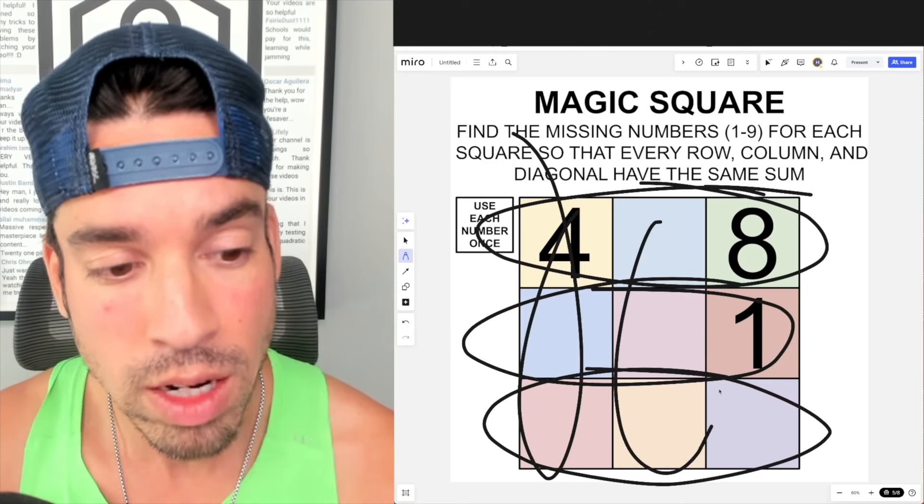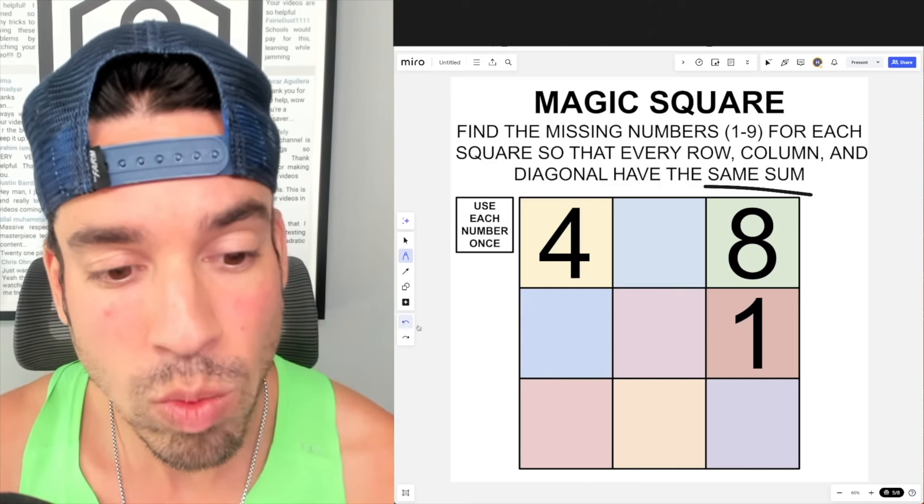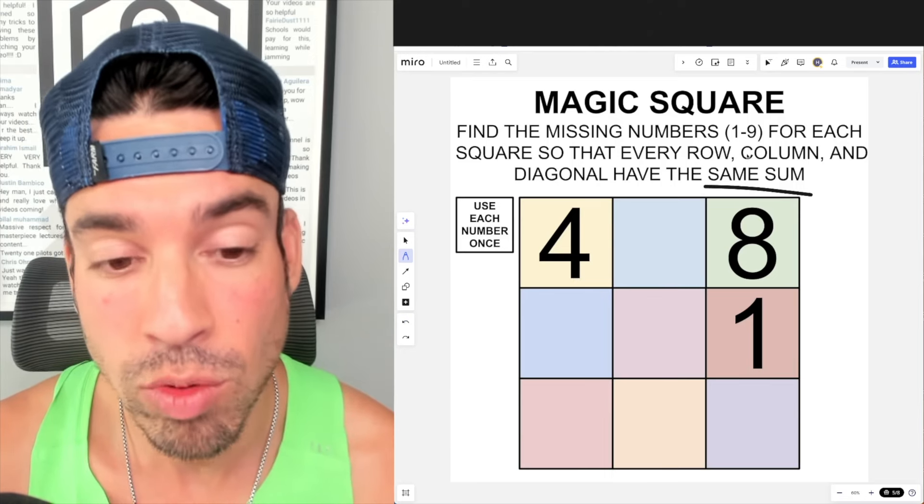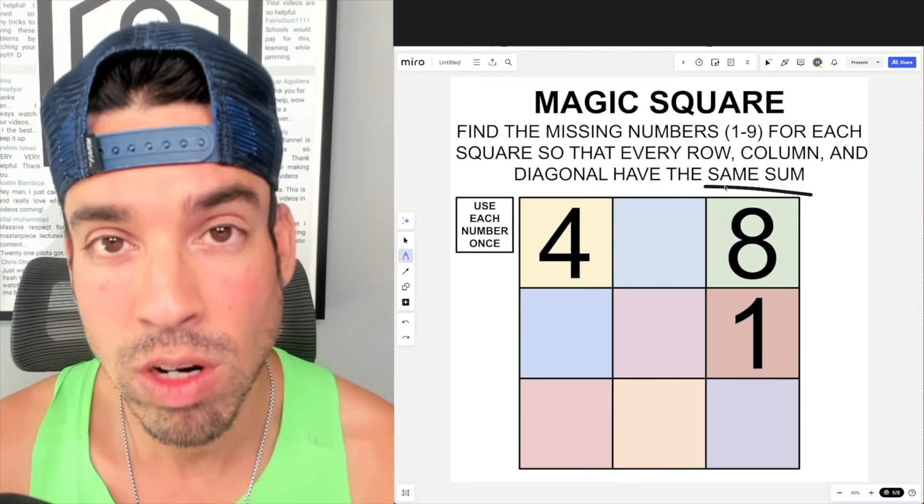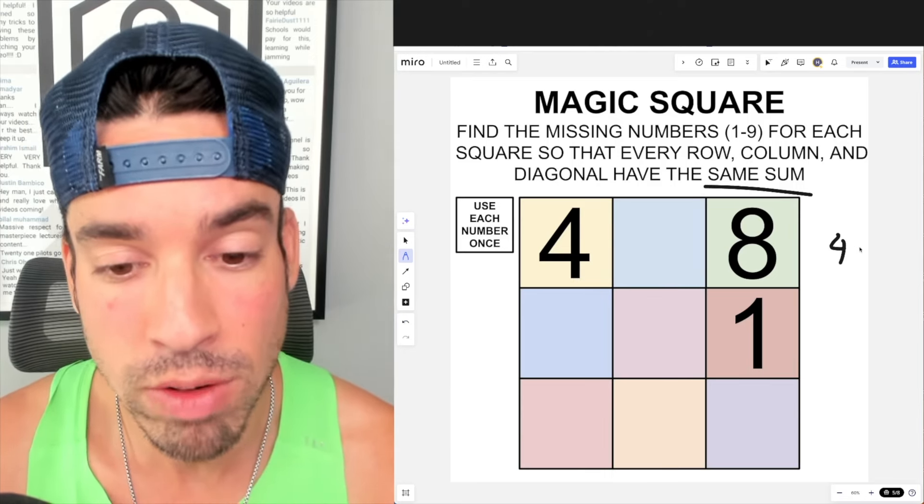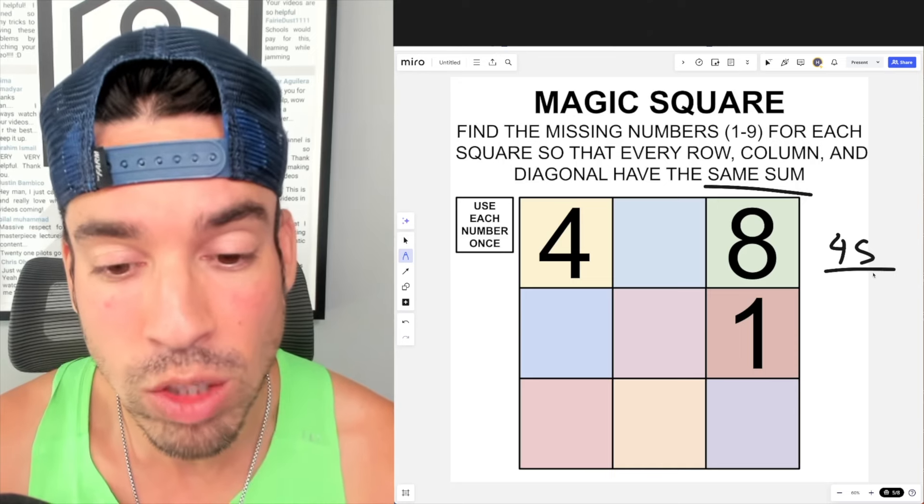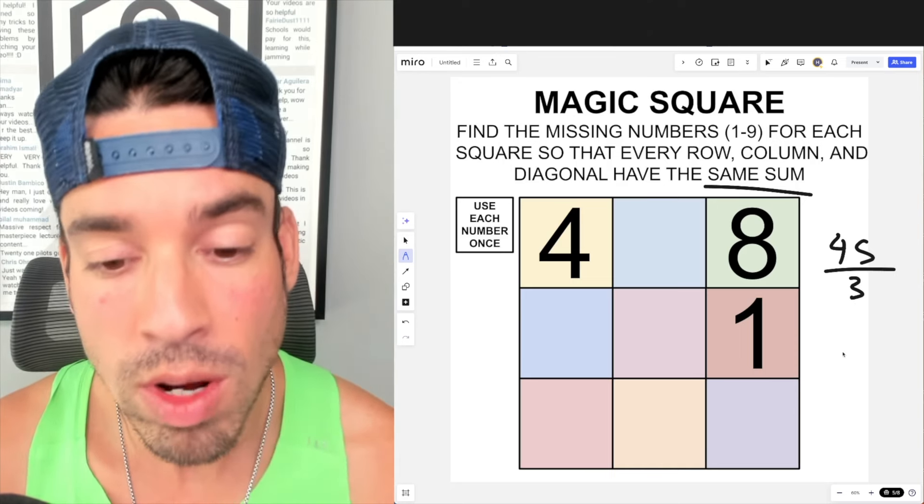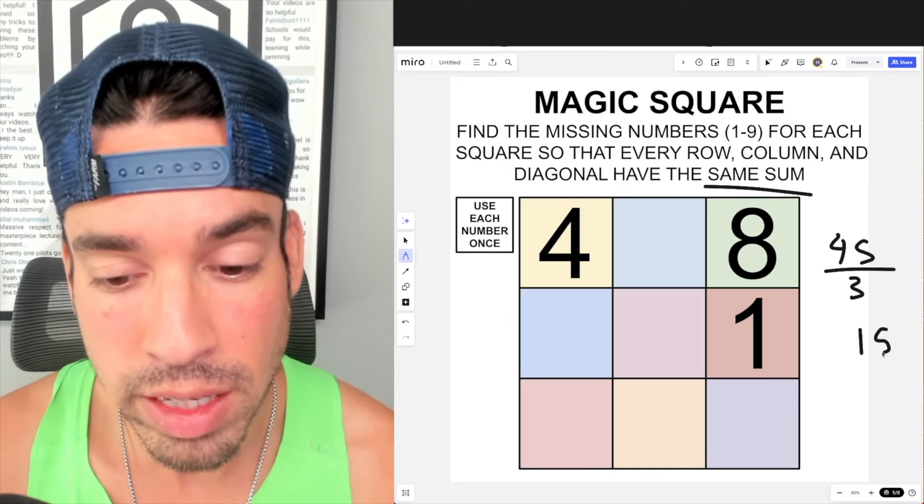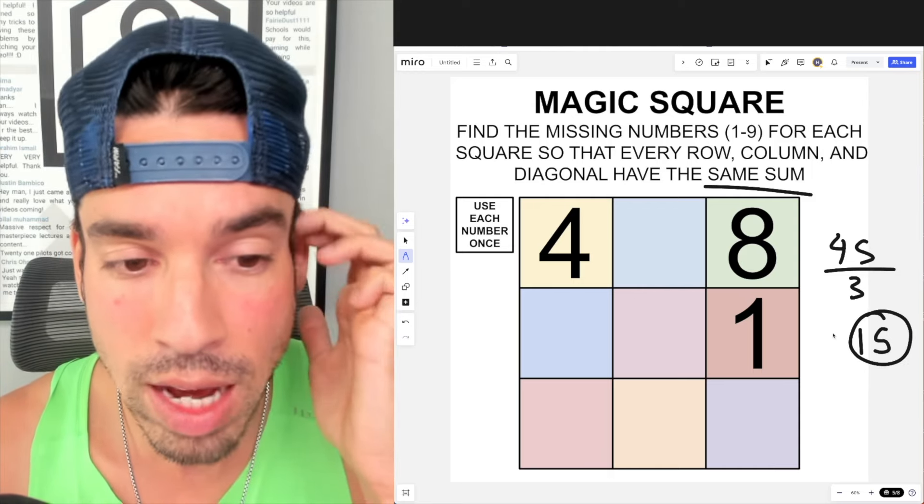One thing that you could do is you can add up one through nine. Now I'm not going to write it out for you here, but if you add up one through nine you get 45. And since we're splitting it into three groups, if you divide that by three, that will let you know that the magic sum we're looking for is 15.